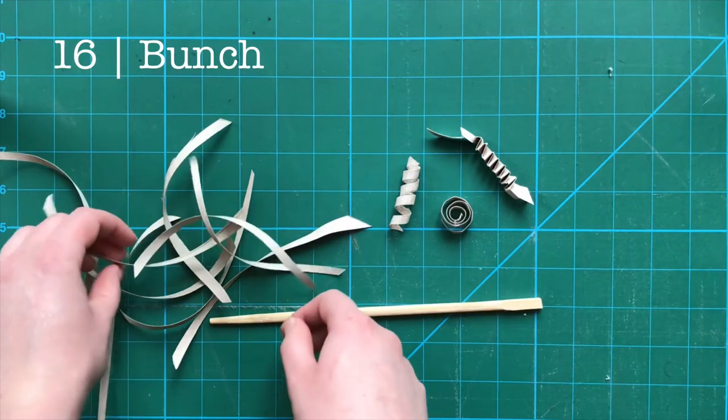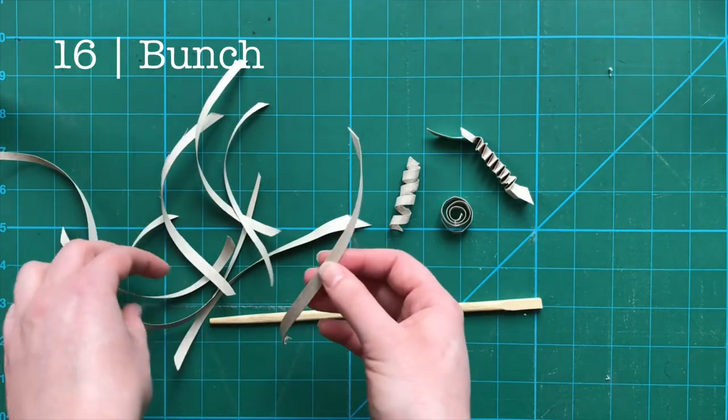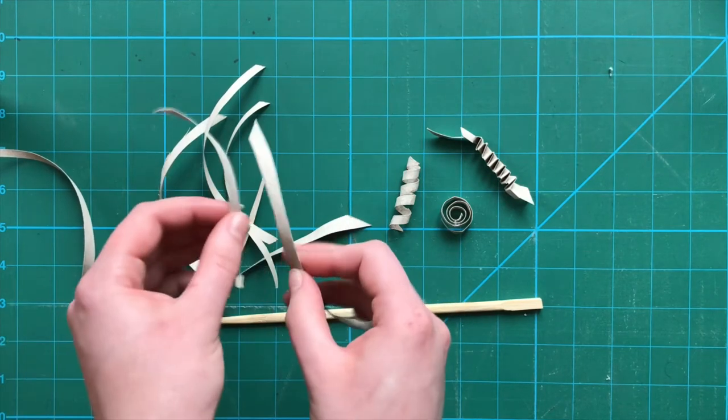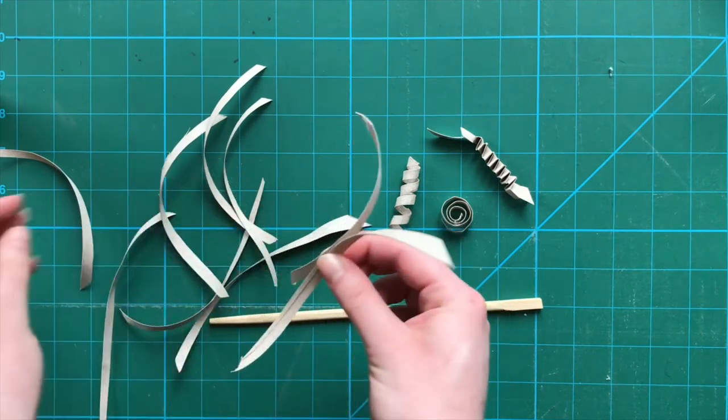Number 16, bunch. Gather up a selection of strips, tie them together in the middle with another strip. This can be interacted with in a similar way to the double spiral, only a smaller version.